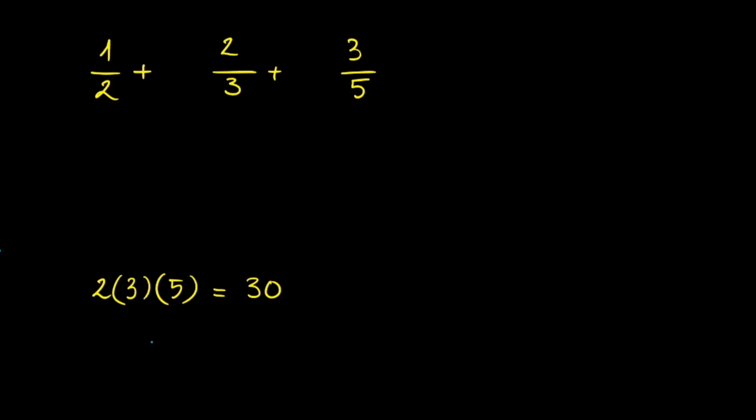It may or may not be the least common denominator, but it is a common denominator. Now to convert each fraction to a denominator of 30, here's what you can do. So the first fraction I'm going to multiply it using the denominators of the other two fractions.